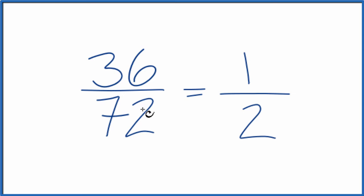If you didn't know that, you could divide this by 2 and get 18 over 36, and then maybe divide that by 2 again. Eventually you do get down to 1 half here.